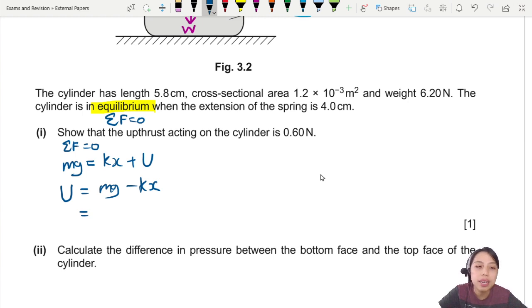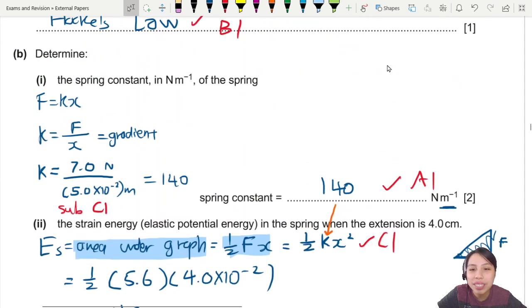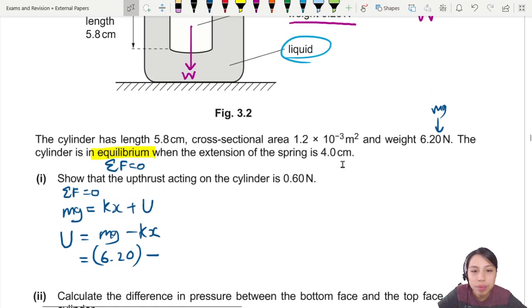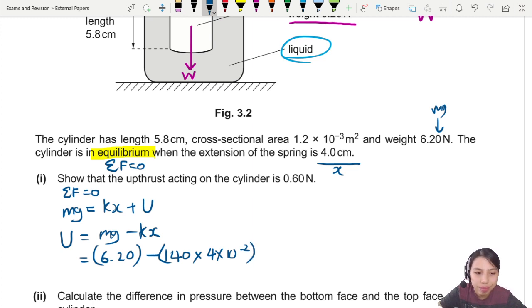Mg is the weight. I just say weight. Weight is given to us. This is our mg already. So we just write here 6.20 minus kx. How to find kx? Oh, we found the kx previously. Where's my spring constant? There we go. Use the previous spring constant, 140, right here. 140 times, what's the extension given to us? This is our x. So I write here 4cm, 4 times 10 to the negative 2. Because everything is in meter. This will give me about 0.60 N. Proven. Very good.